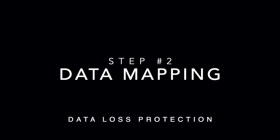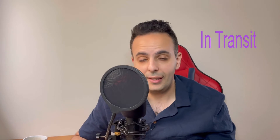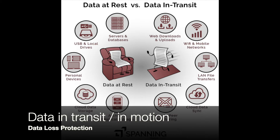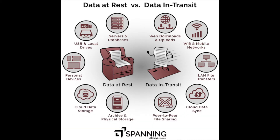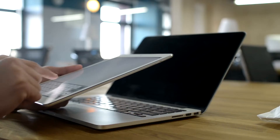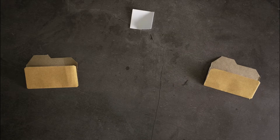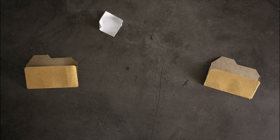Step number two: understand where your data is. Data exists in two states — data in transit and data at rest. Data in transit, sometimes referred to as data in motion, is where you're transferring data from one location to another. Examples include attaching documents in an email and sending it to someone, whether inside or outside your organization, copying data to a USB stick, or moving data to a shared drive or a cloud instance.